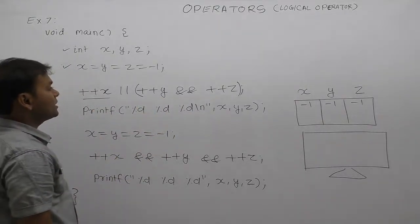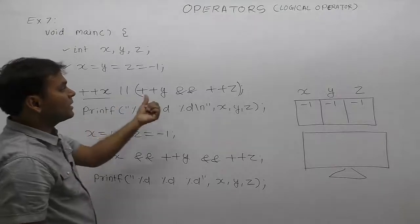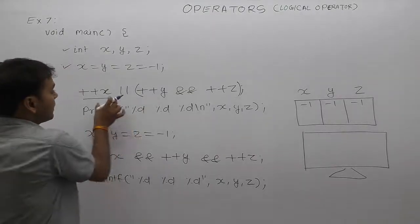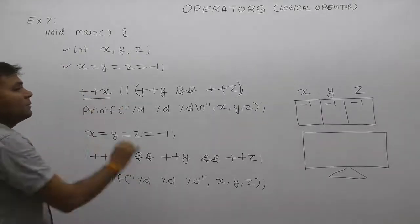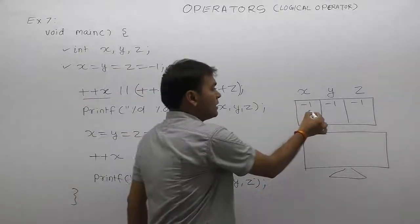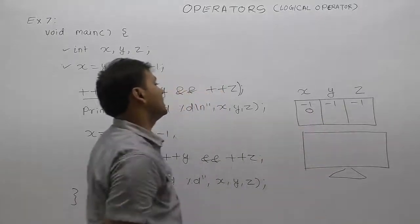OR's first condition false, and then only second condition is tested. Otherwise, if first condition is true, then second condition is not tested. First of all, pre-increment in x. X gets incremented, now x becomes 0.